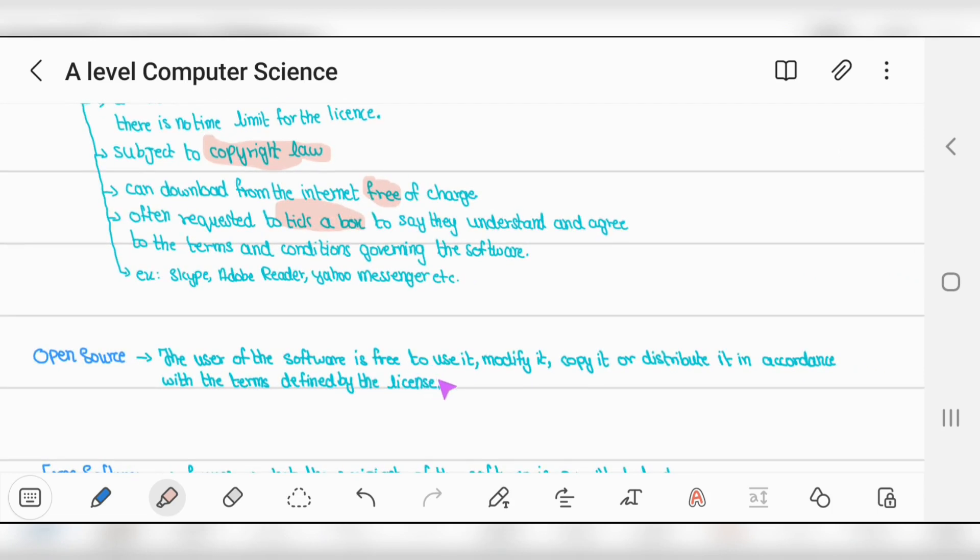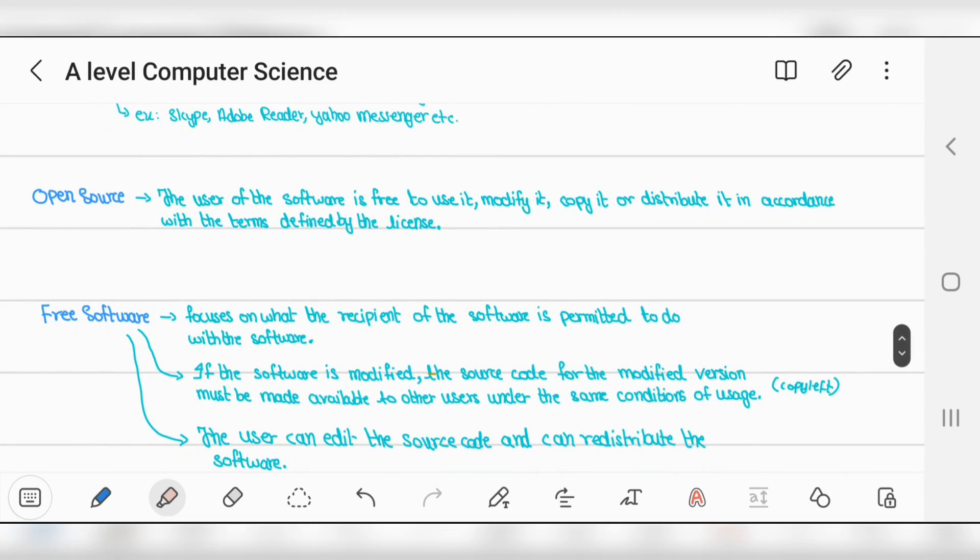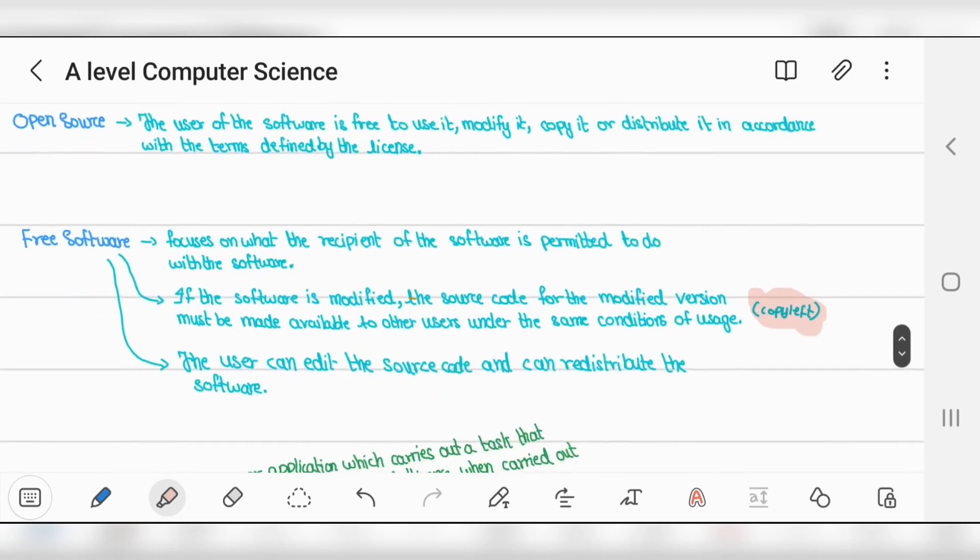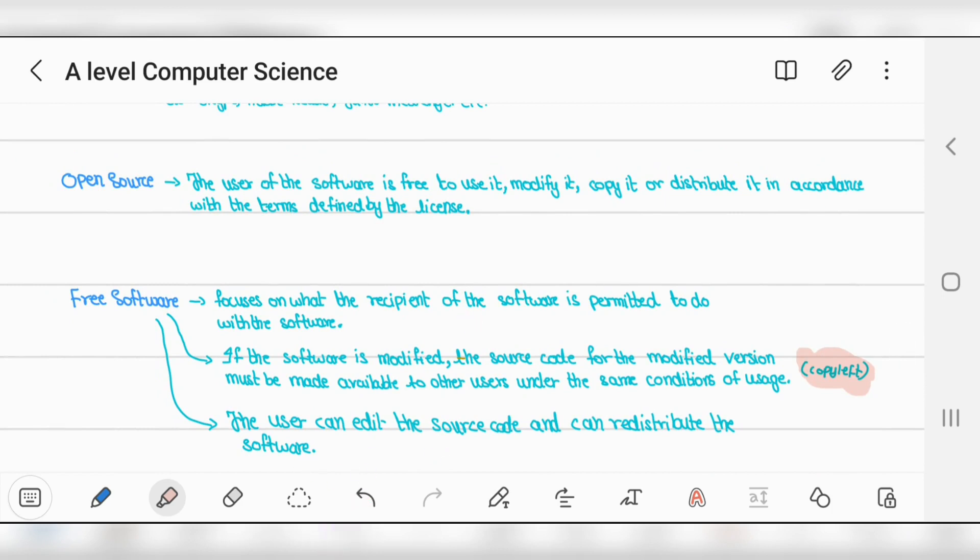Open source means users are free to use, modify, copy, and distribute according to license terms. Free software focuses on what recipients are permitted to do with the software. If software is modified, source code for the modified version must be made available to other users under the same conditions - called copy left. This is the only restriction. Otherwise, open source and free software are quite similar - both allow modification and distribution.